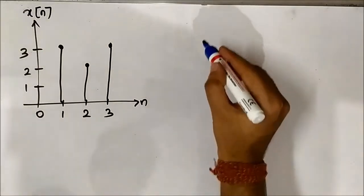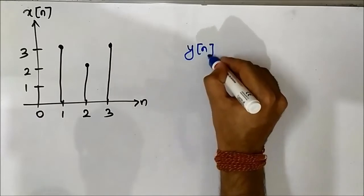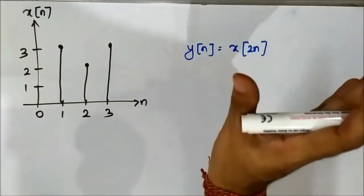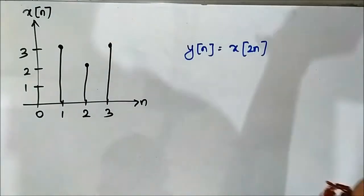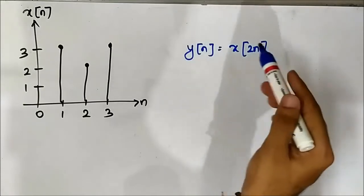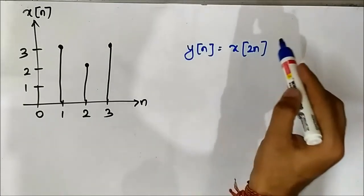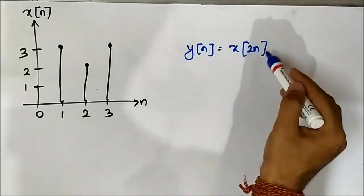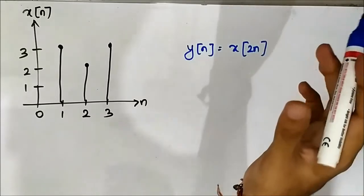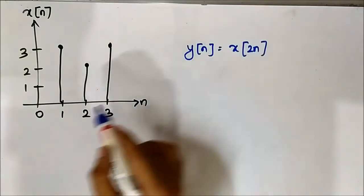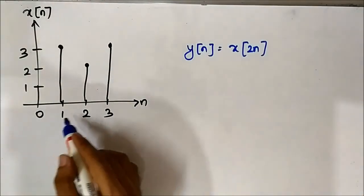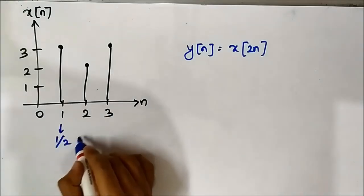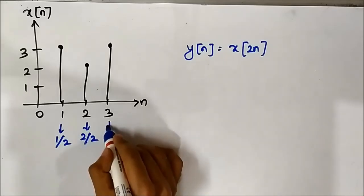First we'll do y[n] = x[2n]. We'll use the shortcut method directly. The principle is the same: when any number is multiplied with n (in the discrete time domain) within the bracket, the time instances will get divided by that number. Here, 2 is multiplied with n, so the time instances will get divided. So 1 becomes 1/2, 2 becomes 2/2, and 3 becomes 3/2.